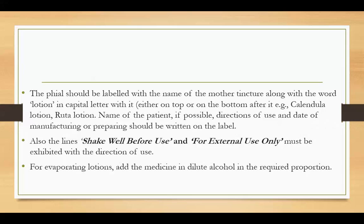For example, calendula lotion, beta lotion — name of the patient if possible — direction of use, and date of manufacturing or preparing should be written on the label. Also, the line should be shaken well before use, and 'for external use only' must be exhibited with the direction of use.